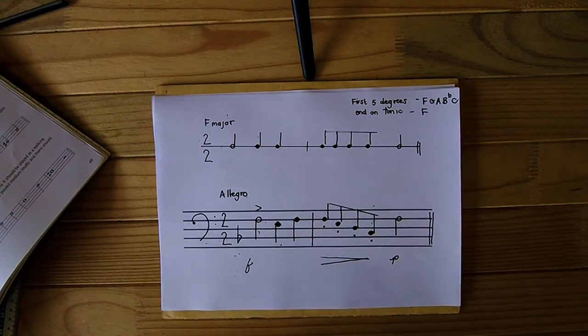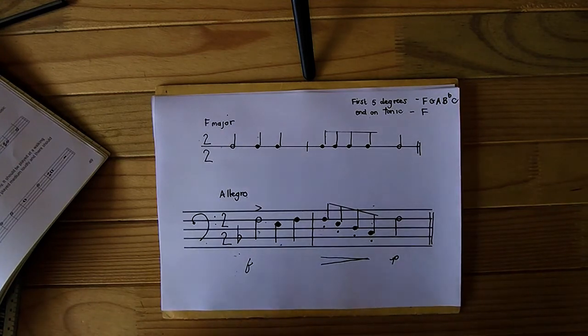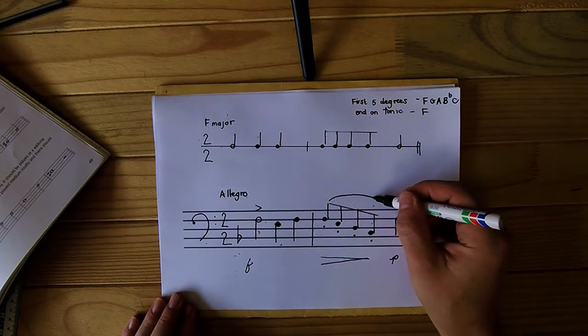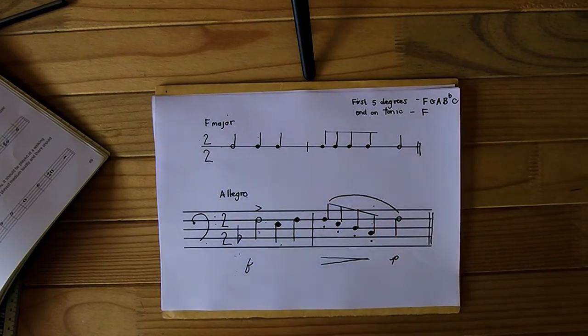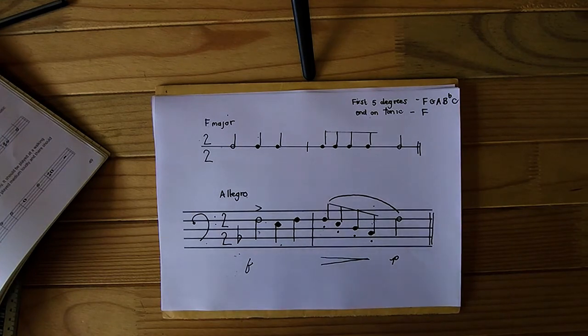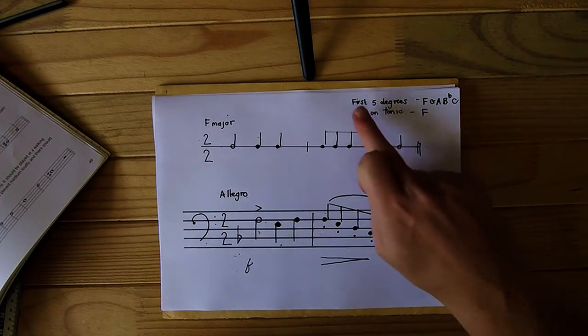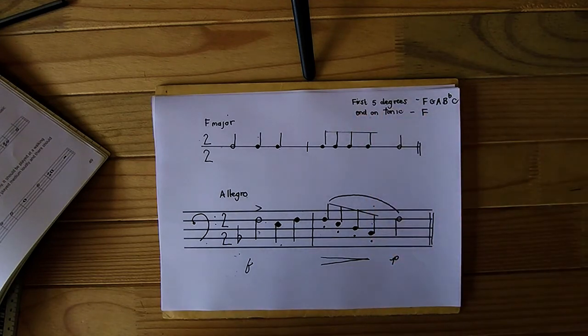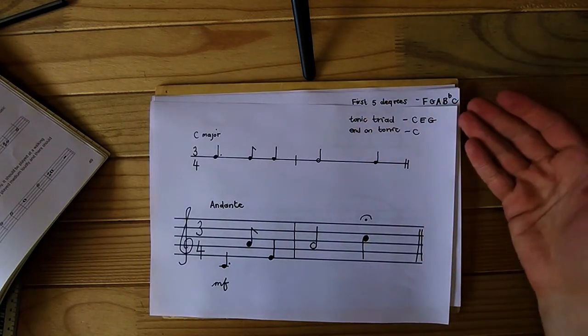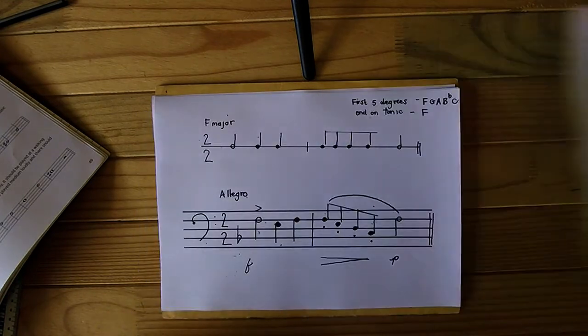And there we have it. A nice melody, rounded off with some nice articulation, phrasing, and dynamic marks. We can even add phrasing marks. Why not? Why not add a phrase line there? Remember, the key here is to be creative. Be creative by staying within the first 5 degrees, or as the first question says, the tonic triad notes. And then remember to end on the tonic, which is F, in this case.